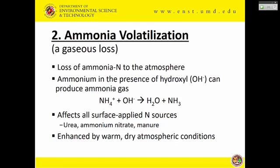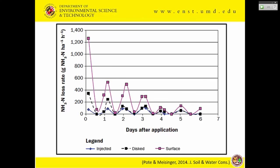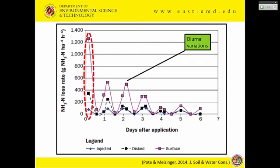Talking about ammonia volatilization: this is a gas loss to the environment. It happens when ammonia fertilizer or urea is applied — urea is converted to ammonium in the soil, and hydroxyl ions can lead to formation of ammonia gas that escapes back into the environment. This affects all surface-applied nitrogen sources, including fertilizers and manures. Warm or dry conditions can really accelerate this loss. The graph shows ammonia loss by day after application — surface-applied materials have higher risk. There's also diurnal variation: during hot, dry midday conditions, you can have more losses compared to nighttime. Incorporating or discing in the material can minimize these losses greatly.